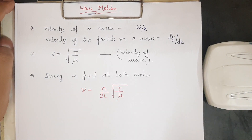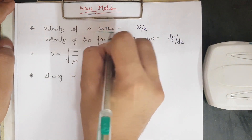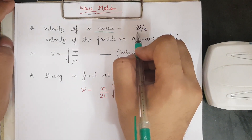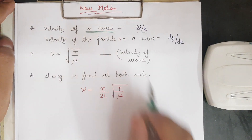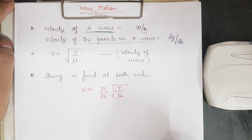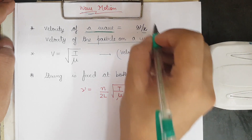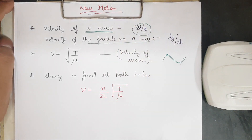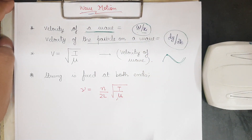First, let me discuss a few important theoretical points. The velocity of a wave is given by ω/k, where ω is the angular frequency and k is the angular wave number. You must remember that this is the velocity of the wave itself, whereas the velocity of a particle on the wave — which moves up and down changing its y-coordinate — is given by dy/dt.